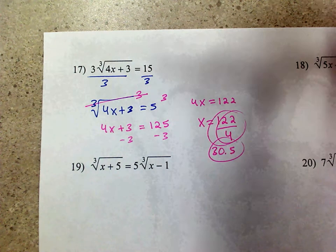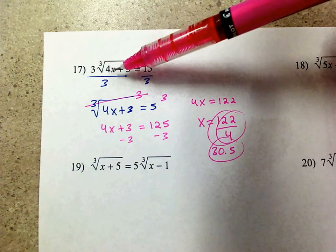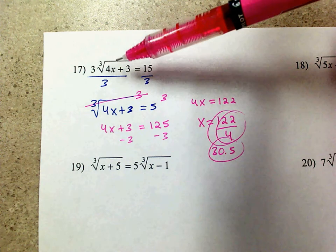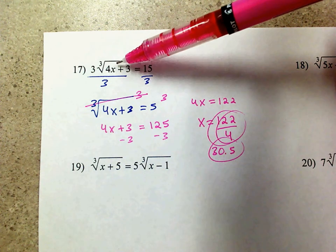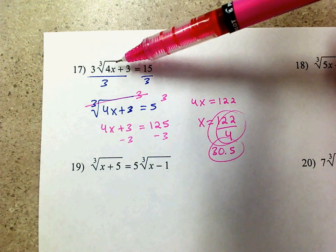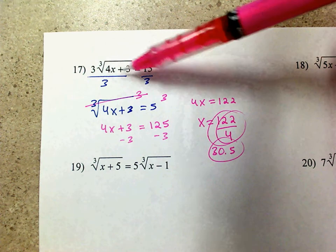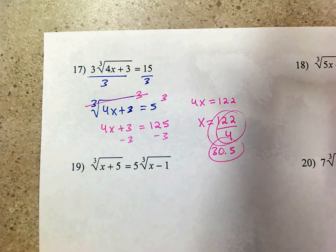As far as checking, we really don't need to worry about cubed roots because it's only the square roots where we have issues with negatives. And when I plug in 30.5 right here, it's positive — it's all good.